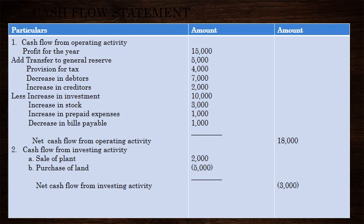This is the net profit for the year — profit for year, we have $17,000. This is $15,000 — the profit for year. We will add items: the operating expenses. The general reserve is $25,000 and $30,000. That is why we transfer a total of $5,000 rupees. What is the transfer of general reserve? We transfer a total of $5,000.